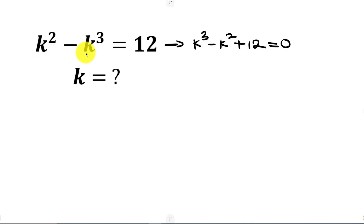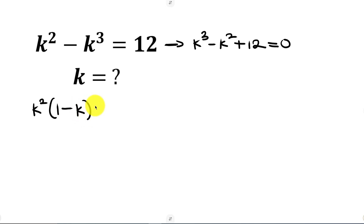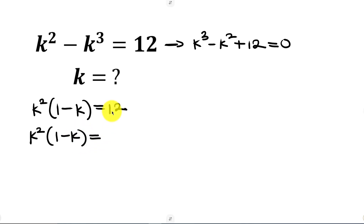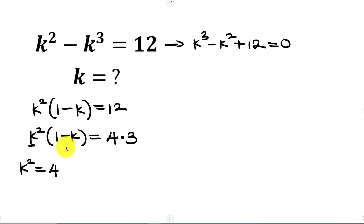Notice that from the first two terms k squared is common, so I can factor out k squared: k squared times one minus k, and this equals 12. Now we're going to split 12 into two factors, one of which is a perfect square — so that will be 4, and 4 times 3 gives 12. We pair the perfect squares together: k squared equals 4 and one minus k equals 3.